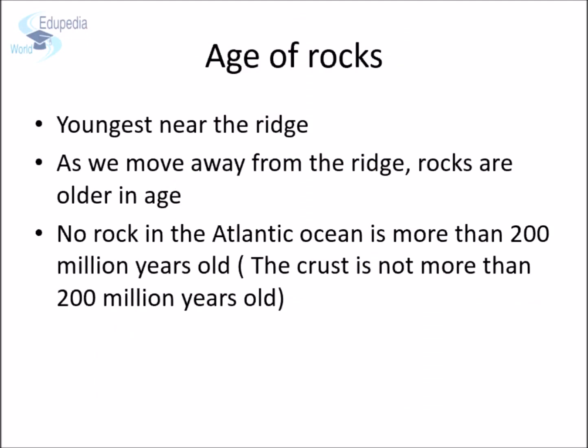The youngest rocks were found near the ridge, and as we move away from the ridge, the rocks become older. No rock in the Atlantic Ocean was more than 200 million years old, meaning the ocean floor is not more than 200 million years old. This also suggests that the continents of America and Africa began separating 200 million years back — which is exactly what Alfred Wegener stated in his theory of Continental Drift.